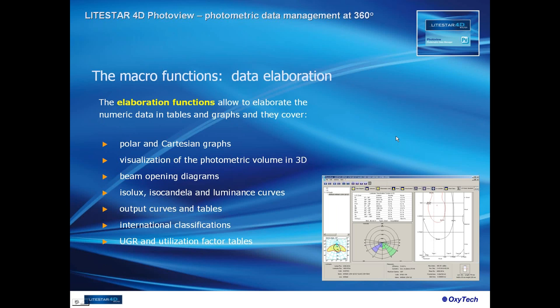The second macro function is data elaboration. The elaboration functions allow converting numeric data into tables and graphs, and they cover polar and Cartesian graphs, visualization of the photometric volume in 3D, beam opening diagrams, isolux, isocandala and luminance curves, output curves and tables, international classifications, and UGR and utilization factor tables. Through Photoview it is possible to have a full set of graphs and tables to manage all your photometry needs.